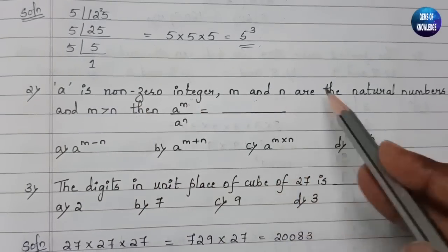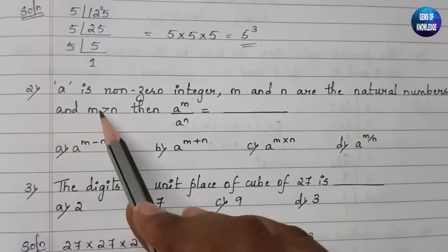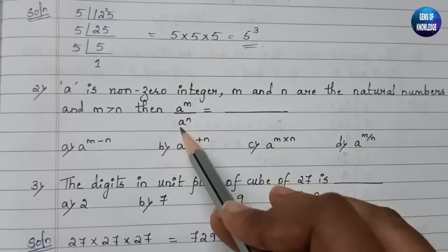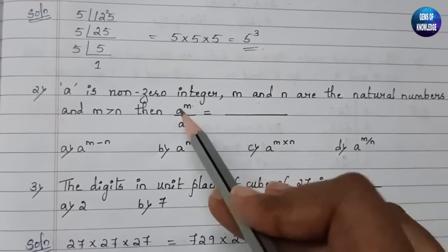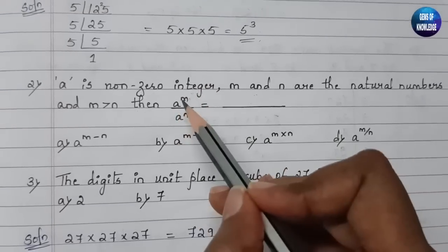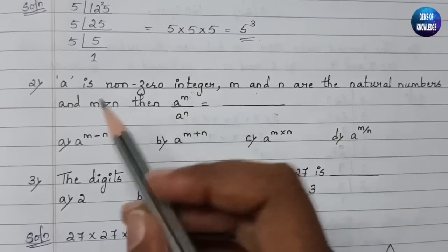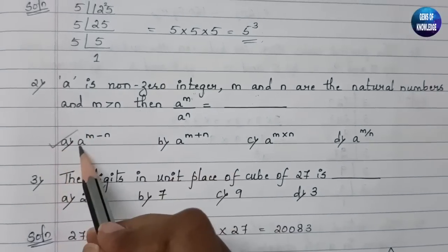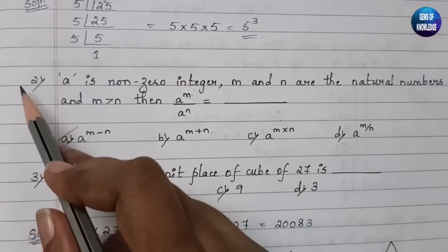The second question: a is a non-zero integer, m and n are natural numbers, and m is greater than n. Then a to the power of m divided by a to the power of n equals dash. Using the identity, a^m ÷ a^n = a^(m−n). So that is the answer to question two.